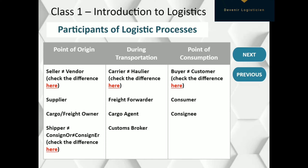Now let's move to some very important participants of the transportation itself from the middle column. Carrier is the person or company which undertakes the transportation of goods — перевозчик. We also have another word with a similar meaning: haulier, which usually relates to road and rail transport.